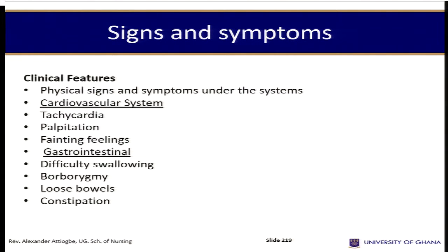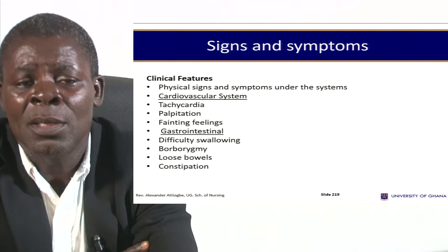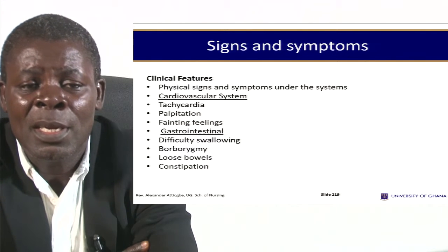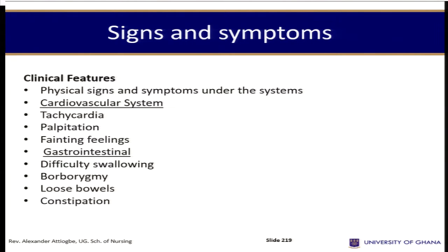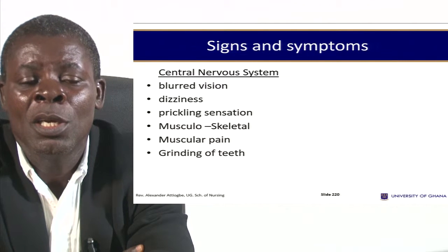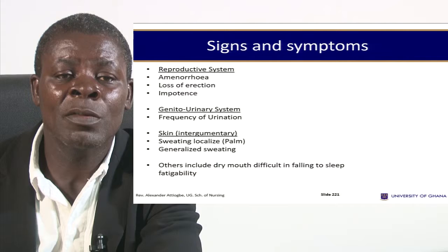The physical symptoms are reviewed by body system. In the cardiovascular system we have tachycardia, palpitations, and fainting feelings. In the gastrointestinal system we have difficulty swallowing, borborygmi, loose bowels, and constipation. In the central nervous system we have blurred vision, dizziness, and prickling sensations. In the musculoskeletal system we have muscular pain and grinding of teeth.